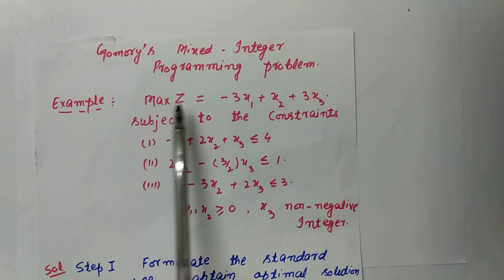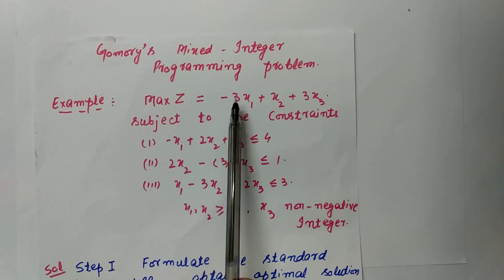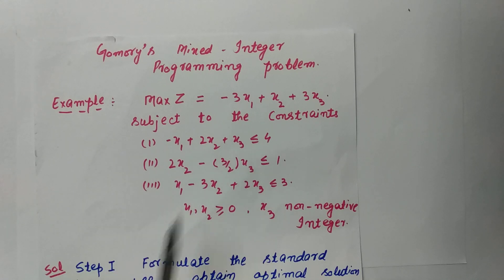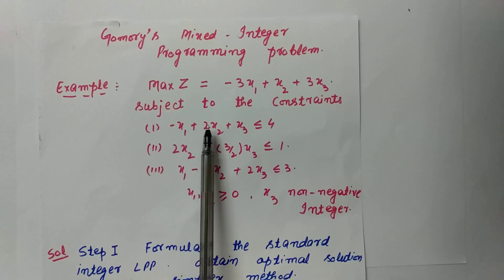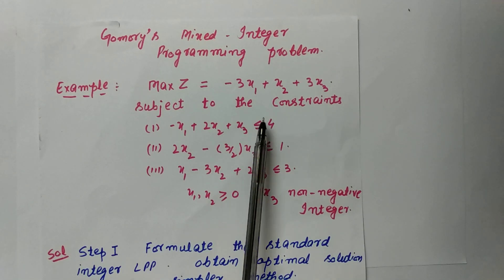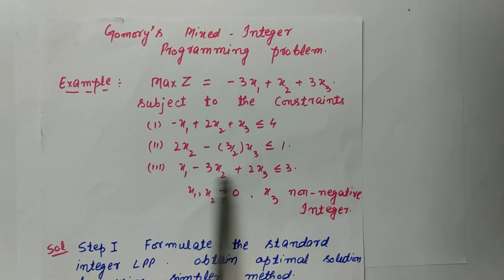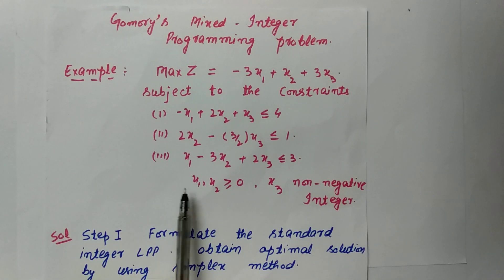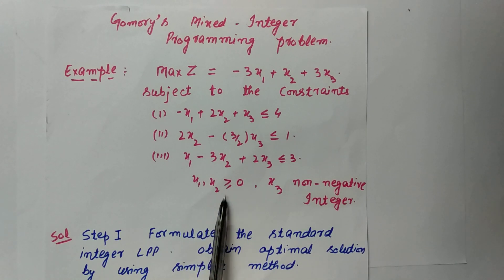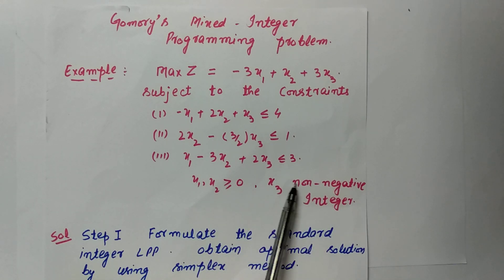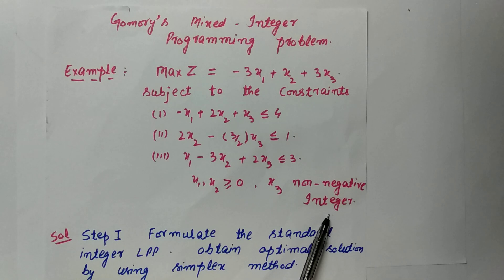The example is: Maximize z = −3x1 + x2 + 3x3, subject to the constraints −x1 + 2x2 + x3 ≤ 4, plus a second and third constraint. Here x1 and x2 are greater than or equal to 0 and can be integers or non-integers, but x3 must always be a non-negative integer.